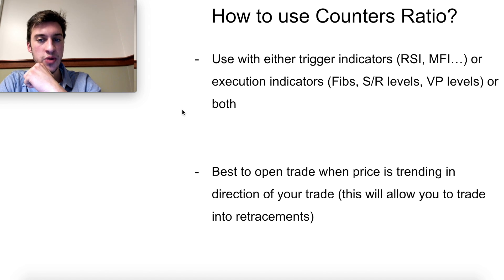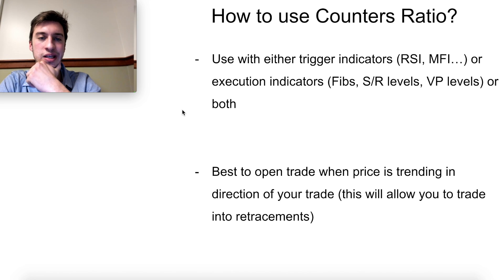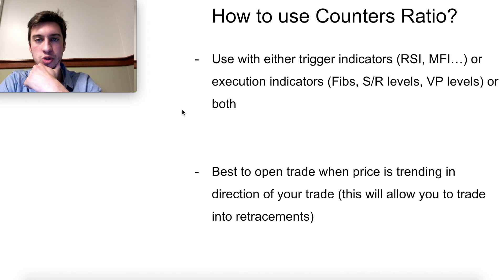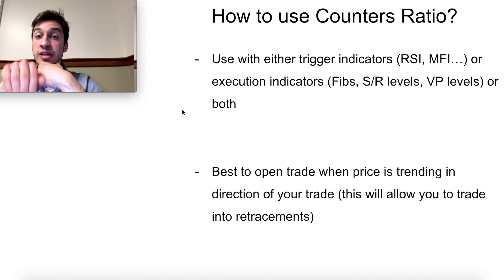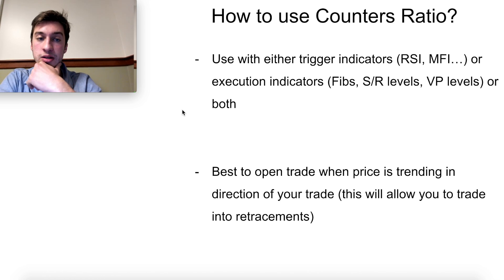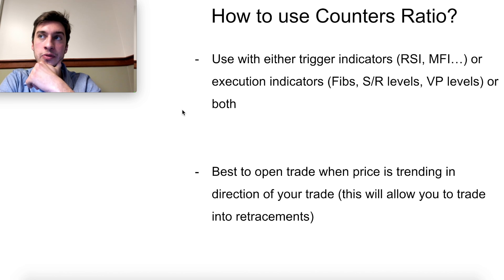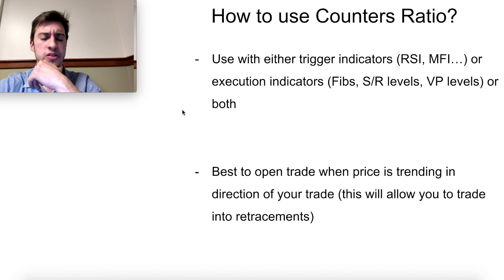With this scalping strategy using order flow, you want to open a trade when price is trending in the direction of your trade. Then you want to wait for a retracement — a move against the trend — and buy into that retracement in a bullish trend, or sell into it if price is in a bearish trend. Let's take a look at some examples.